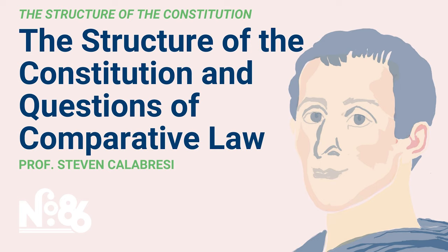The separation of powers is a deliberate effort by the framers building on the writings of Montesquieu, who published his Spirit of Laws in 1748 or 1749. Montesquieu argued that there should be a separation of legislative, executive, and judicial power for the same reason that the ancient philosophers thought there should be a mixed regime of the one, the few, and the many. Essentially, Montesquieu, like the ancient philosophers and like Lord Acton, was concerned with the idea that power corrupts and absolute power corrupts absolutely. So he wanted a separation of powers so that there wouldn't be absolute power, which would corrupt absolutely.